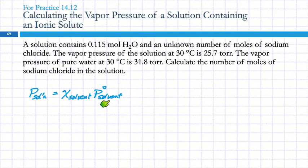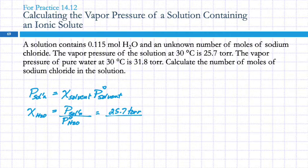We know these two vapor pressures, so we can calculate the mole fraction. The mole fraction of the solvent, here the solvent is water, equals the vapor pressure of the solution divided by the vapor pressure of pure water. The solution had a vapor pressure of 25.7 torr, pure water was 31.8 torr. So the mole fraction is 0.80818, the mole fraction of water.